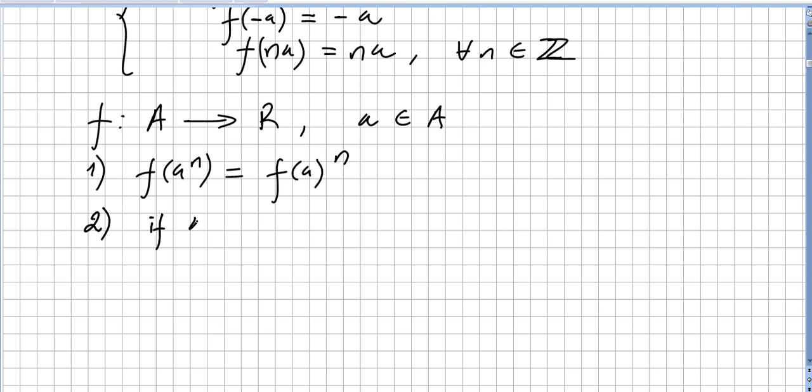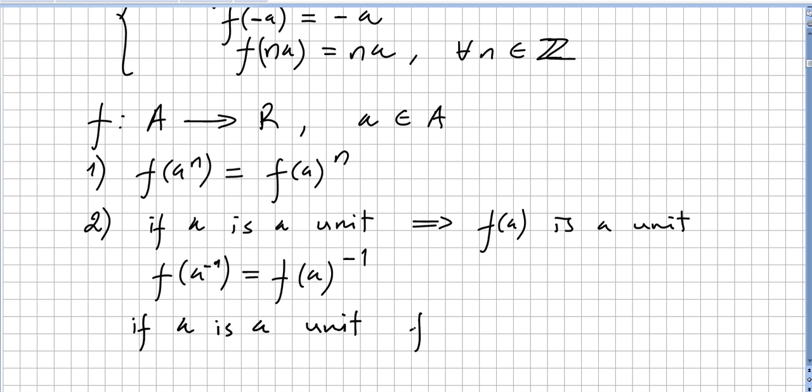Second property: if a is a unit, this means that f of a is a unit too, and f of the inverse will be the same as the inverse of the image.